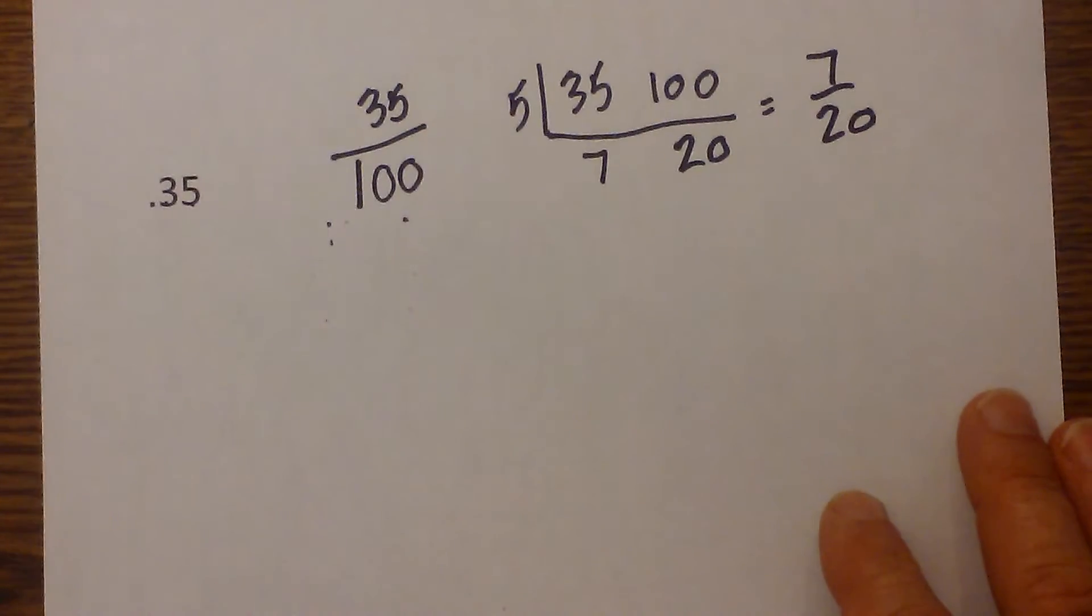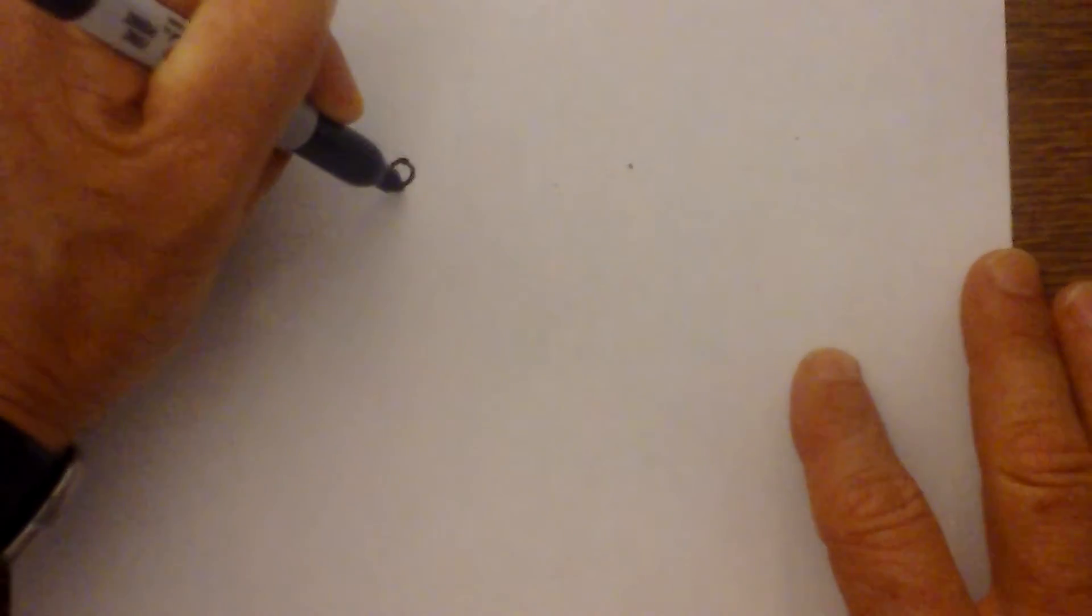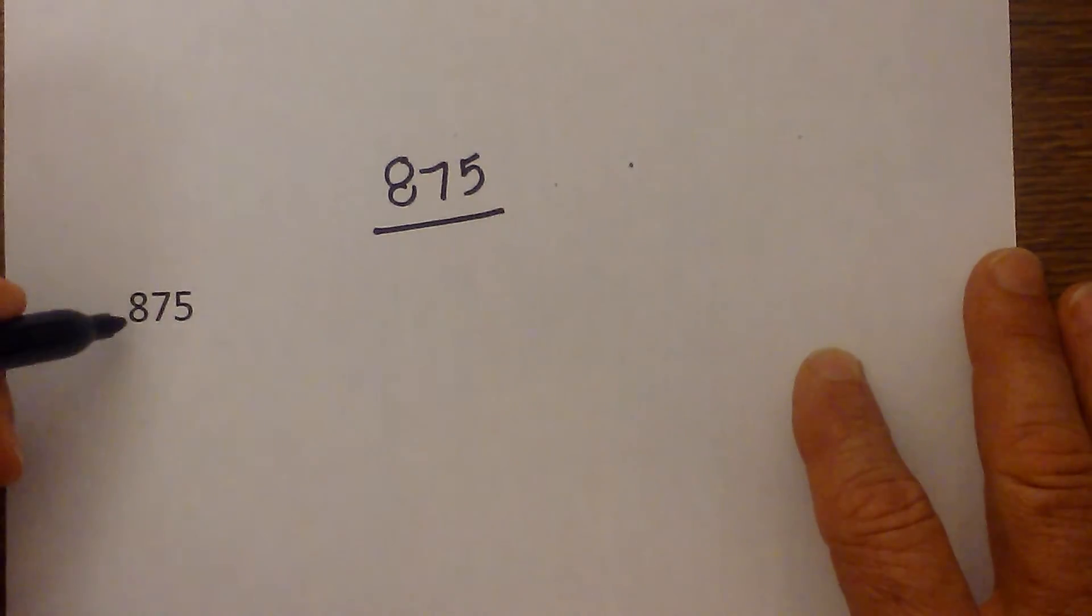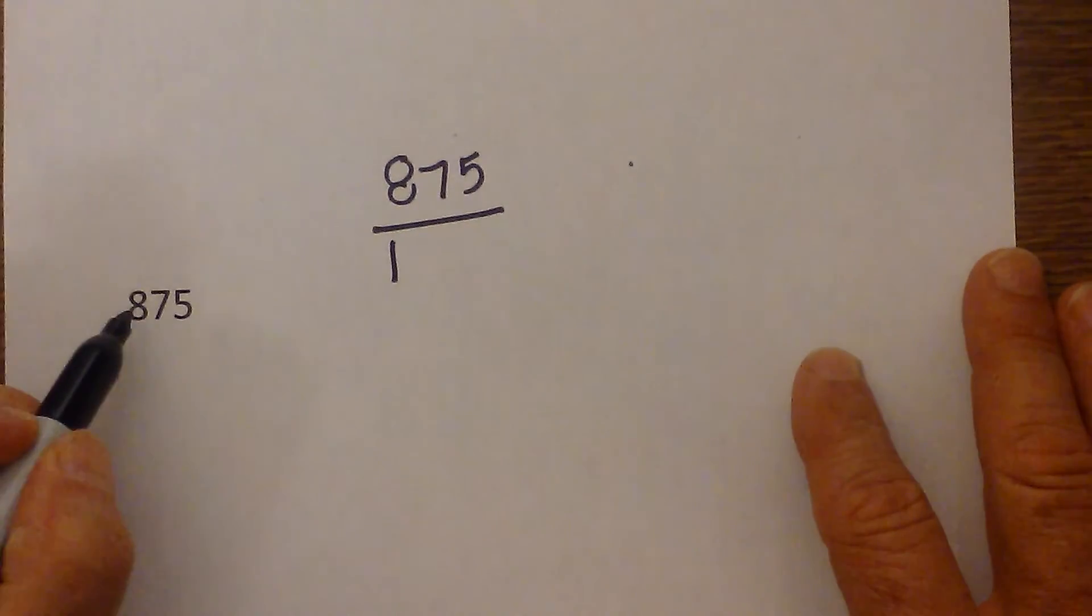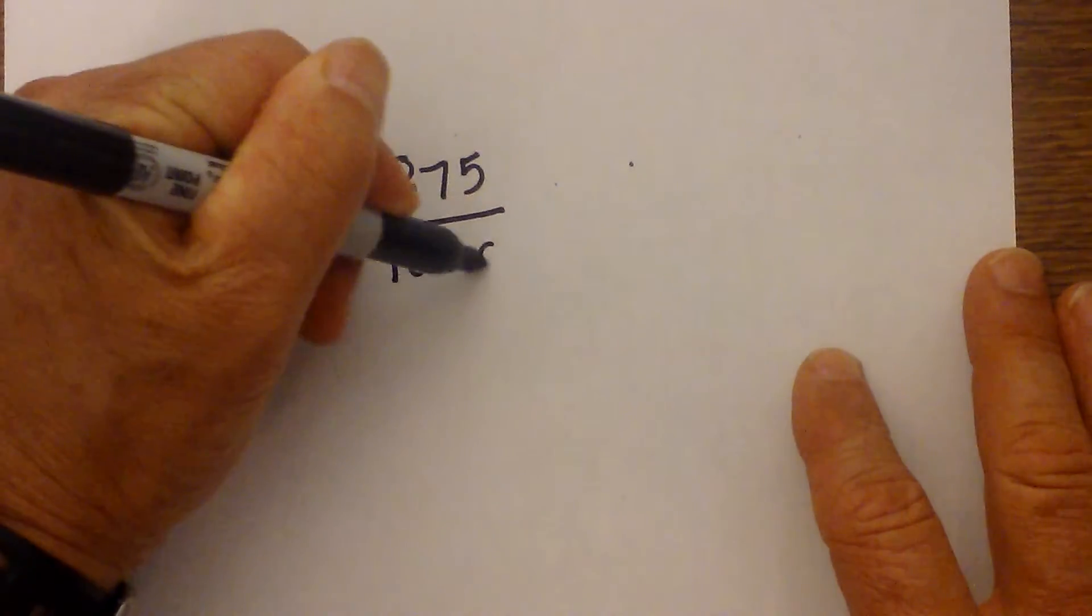Now let's go one more. Let's move it up to 0.875 and make sure everything is correct. So I write 875 as a fraction. I write a one. I count one, two, three, so there's one, two, three.